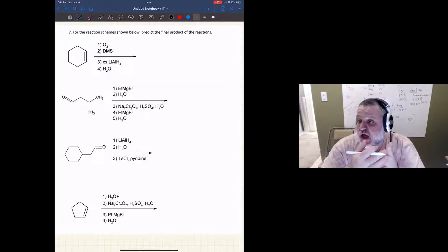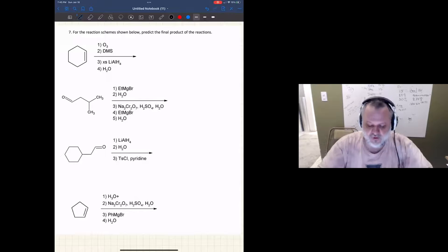Now, you can write down all of the steps if you want to write down the intermediate products, and I think that's generally helpful until you really master all these reactions so that you can at least keep track of where we're heading. Let's think about this first one.